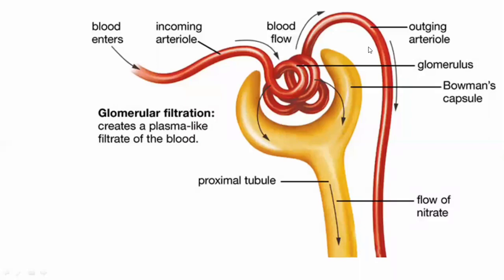The process of glomerular filtration is carried out by the glomerulus. Blood coming from the renal artery — about 20 to 25 percent of the cardiac output — enters the kidney through the afferent arteriole, which forms a tuft of capillaries known as the glomerulus. Blood is filtered out in the form of plasma, forming a plasma-like filtrate.